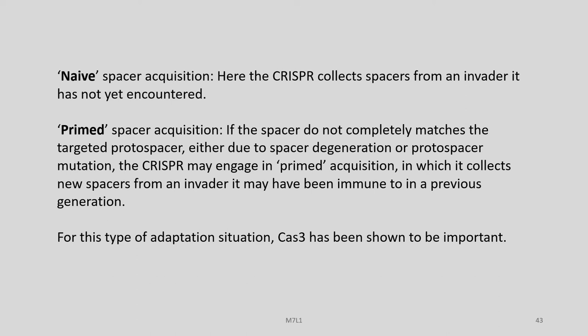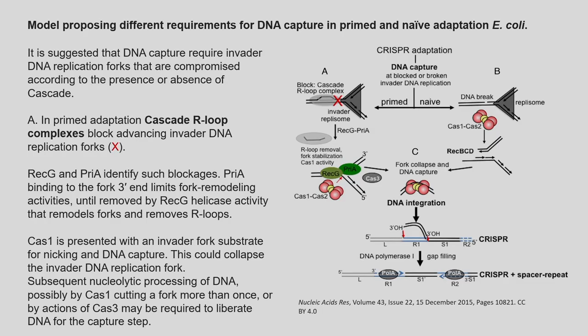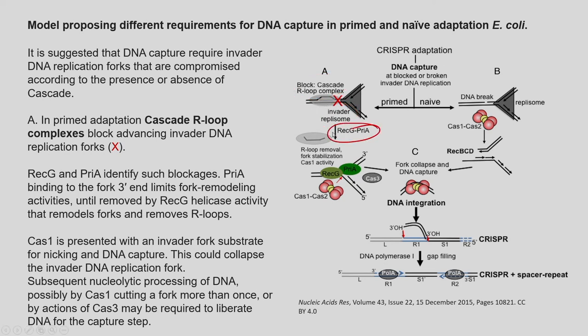In primed spacer acquisition, the CRISPR collects a new spacer from the invader it may have been immune to in the previous generation. For this type of adaptation, Cas3 has been shown to be very important. You can see here the CRISPR adaptation: DNA capture at blocked or broken invader DNA replication. On one side is primed spacer acquisition and on the other naive spacer acquisition. Key players include the cascade R-loop complex, invader replisome, RegG, PriA, and the Cas1-Cas2 system, and RecBCD — both pathways lead to DNA integration.